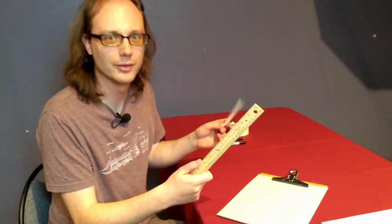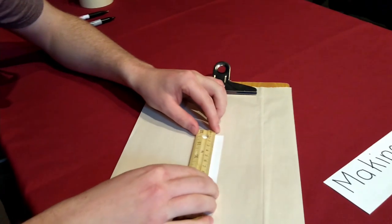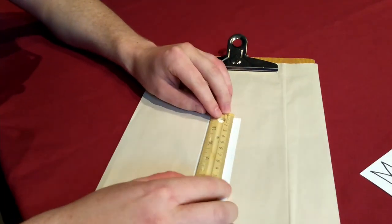All right. We've got our piece of paper. We've got a ruler. We're going to make a sextant. I'm going to place the piece of paper down, going to line up the ruler with the zero mark right on the edge of the piece of paper.